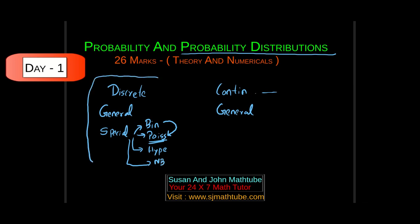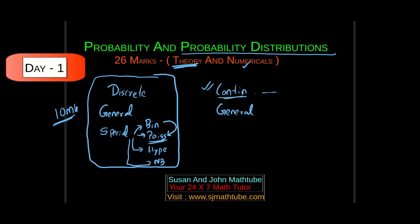Normally from this part there will be a 10 mark question — two questions totalling 10 marks. The theory is very important. They might ask two numericals, or one theory and one numerical, or even in the worst case, two theory questions. For continuous distributions, first study the general case, because they have asked many times questions based on the general case.